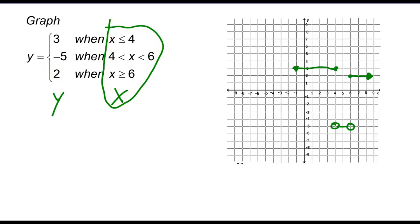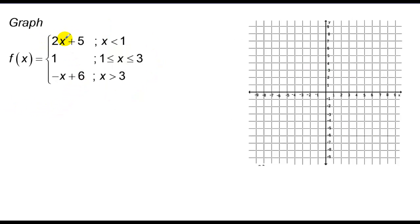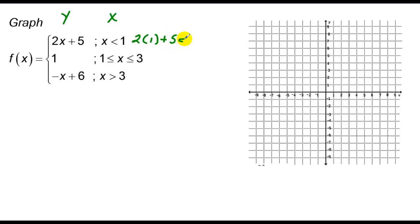These are going to start getting a little tougher now. We don't just have constants for y — we actually have equations of lines. We want to graph y equals 2x plus 5 when x is less than 1. At x equals 1, I plug in to get 2 times 1 plus 5, which equals 7. So at x equals 1 this graph would equal 7, but I can't include it because it's strictly less than, so I go over to 1, up to 7, and put an open circle.